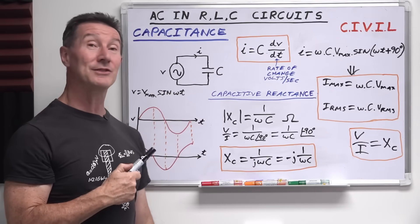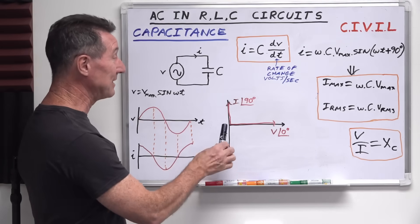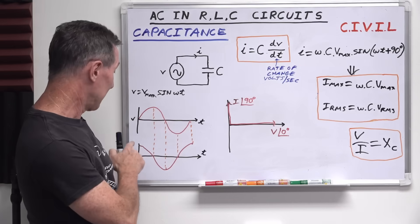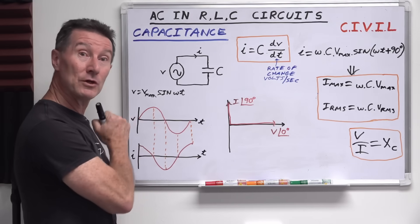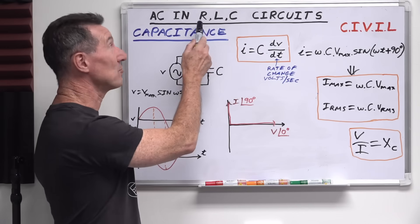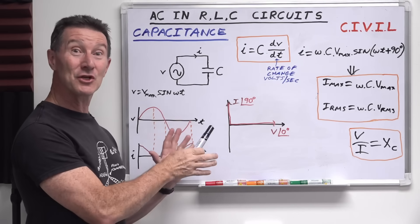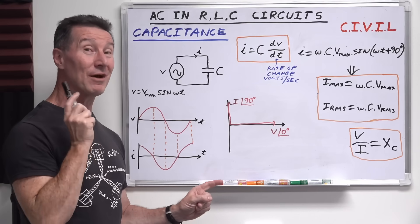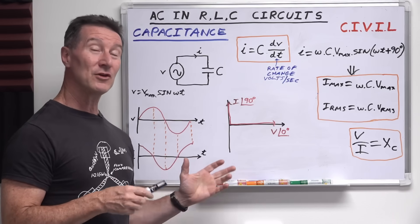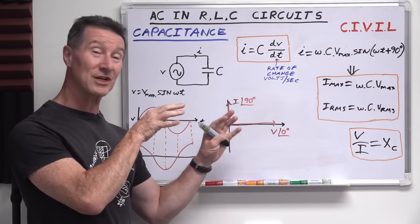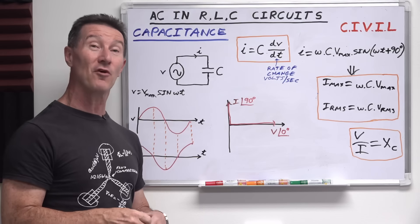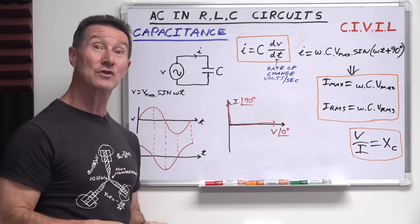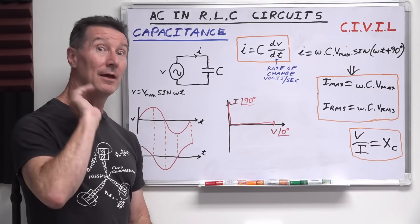That is basic AC circuit theory for resistors, inductors, and capacitors. It's not too hard at all. Remember you get a capacitive reactance and an inductive reactance — that's different to impedance, which I'll cover in another video. I hope you found that video useful. If you did, please give it a big thumbs up, and as always you can discuss in the comments or on the EEVblog forum. Check out my new merch store on TeePublic — new design t-shirts, hats, stickers, and more.